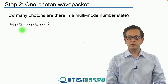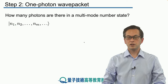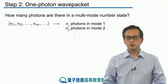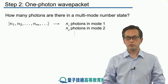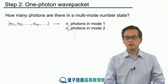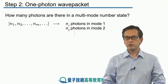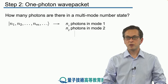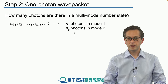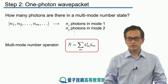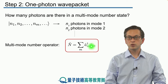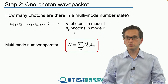This is our multimode number state given by N1 photons in mode 1, N2 photons in mode 2, and so on. The number of photons is just the sum of N1 plus N2, and so on. The quantum operator representing the number operator for this case is N-hat, equal to the sum of individual number operators for every mode M.